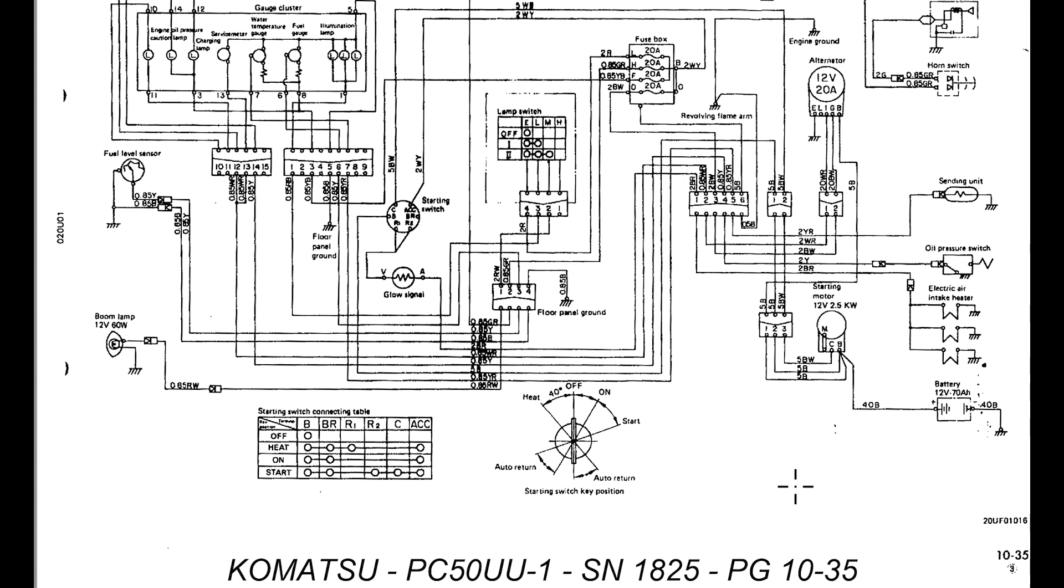All the diagrams are going to have some kind of titling on them. In this case, at the bottom of the page, it says Komatsu. That PC50UU-1 is a model that was not normally sold in the United States. It's known as a gray market machine.